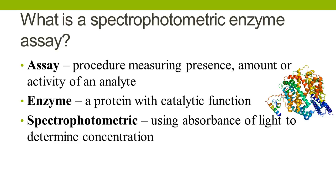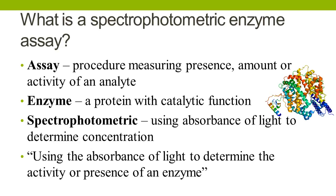In particular, we can combine all of these ideas together to mean that we're using light to measure the presence, amount, or activity of an analyte. This is an assay. Where our analyte is a protein or a protein with catalytic function, an enzyme. Putting all of this together, spectrophotometric enzyme assays are using the absorbance of light to determine the activity or presence of an enzyme.